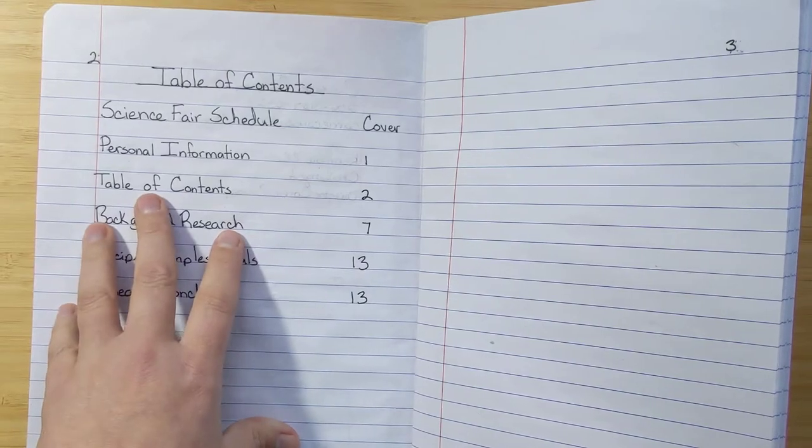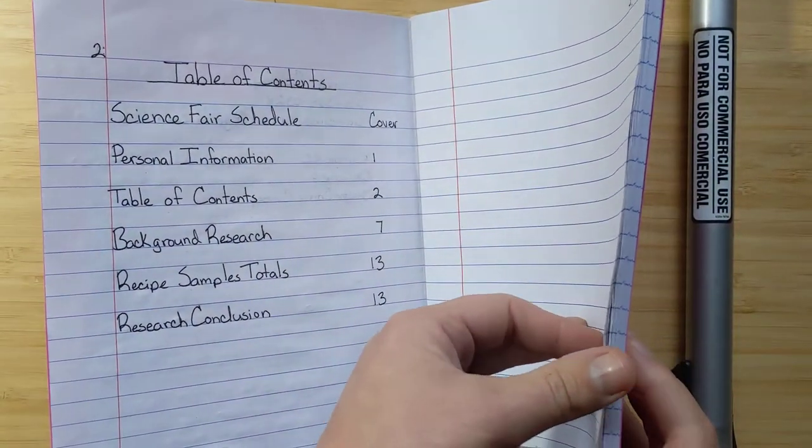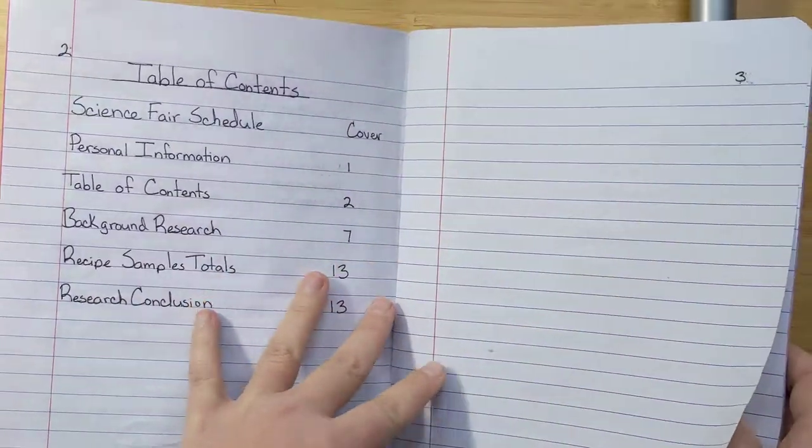So then for the table of contents, I skipped two page spreads. So I've got these two pages for table of contents and also these two, and you just leave these blank at the front. And if you don't fill them all up, it doesn't matter.